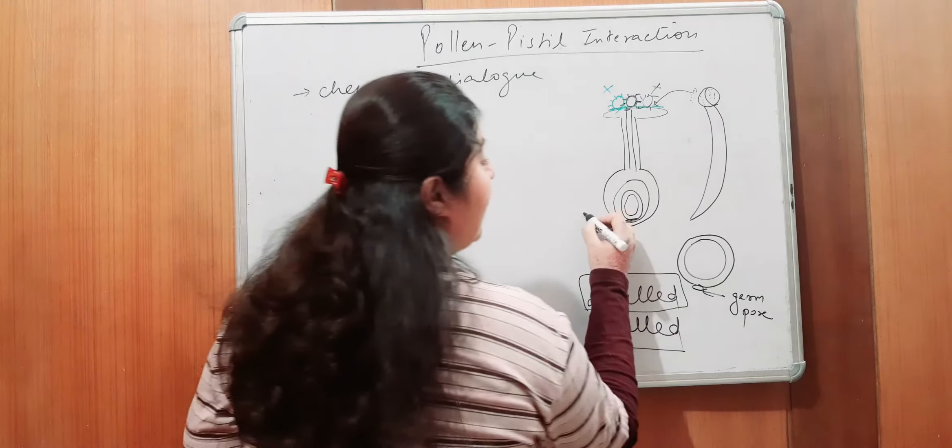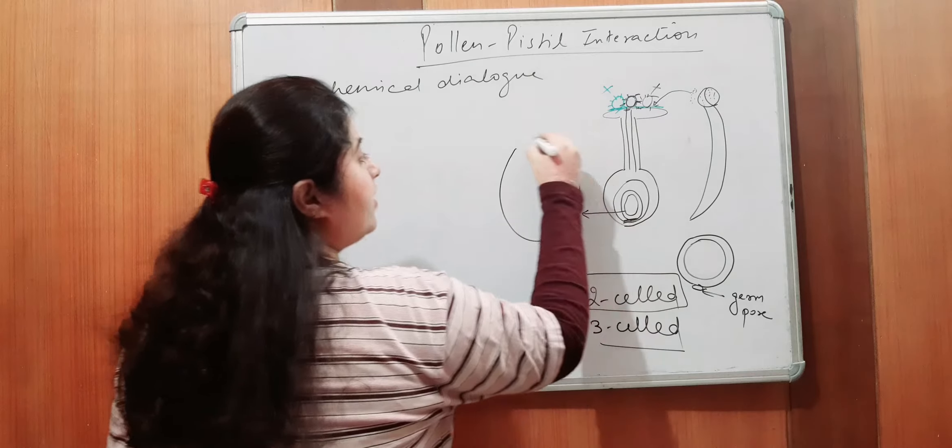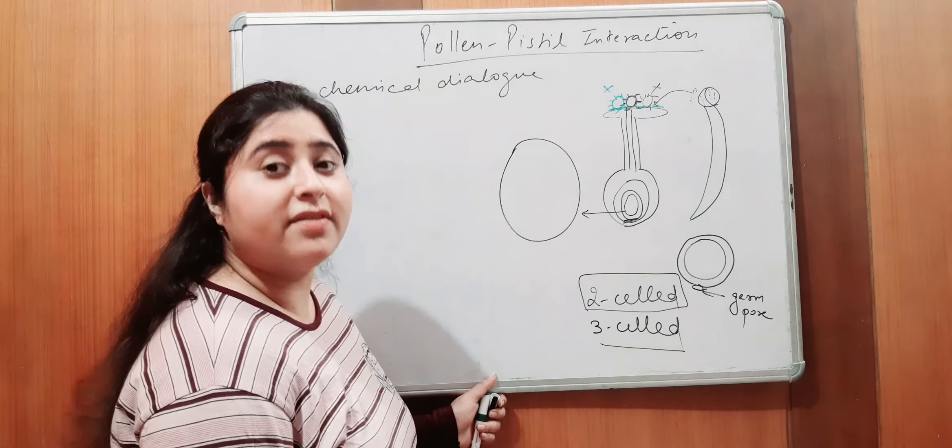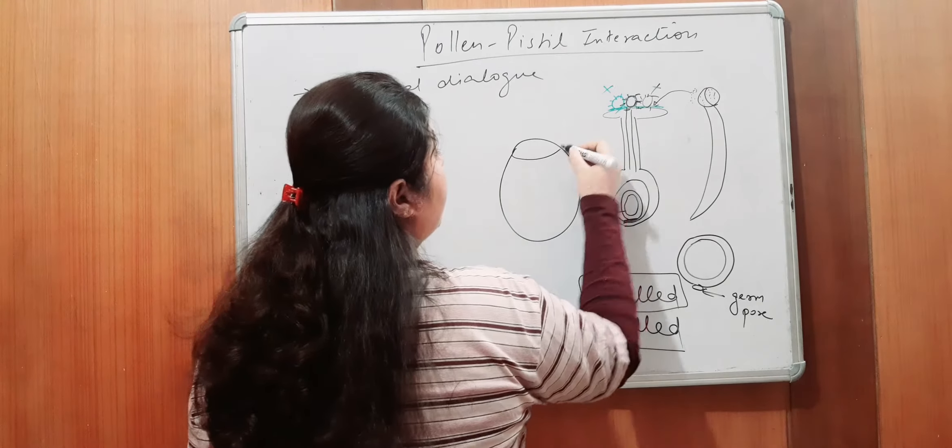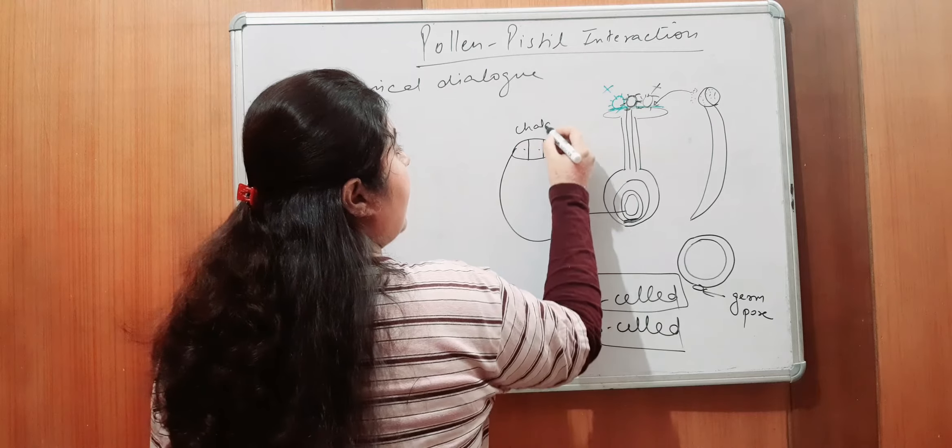Agar hum female gametophyte ka structure ki baat karay, toh, kya kiya tha? It was seven-celled, eight-nucleated structure, embryo sac, mature embryo sac, agar aapko yad ho, in the case of chalazal end, three cells are present called as antipodal cells.